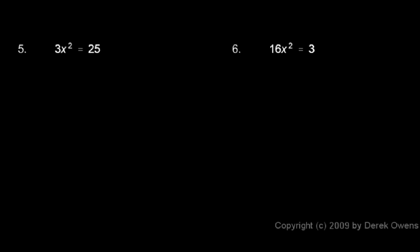In problem 5, I have 3x squared equals 25. So I'll divide both sides by 3. On the left, the 3's cancel out, and I'm left with x squared equals 25 thirds. I take the square root of each side, and that gives me x equals plus or minus the square root of 25 thirds.